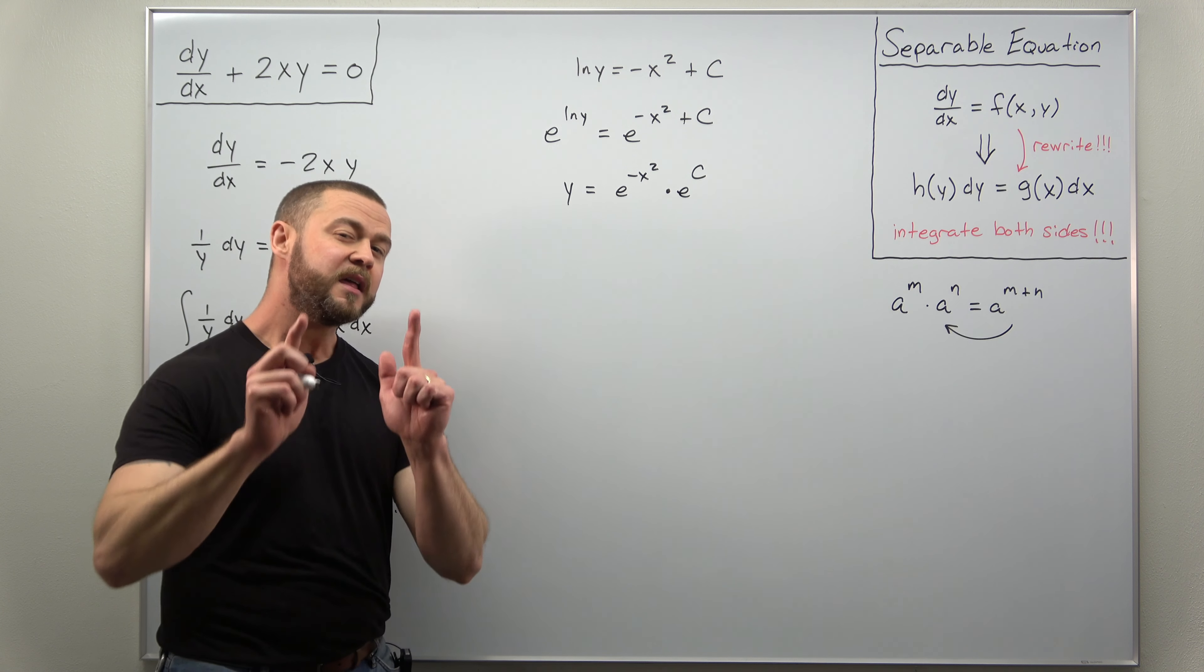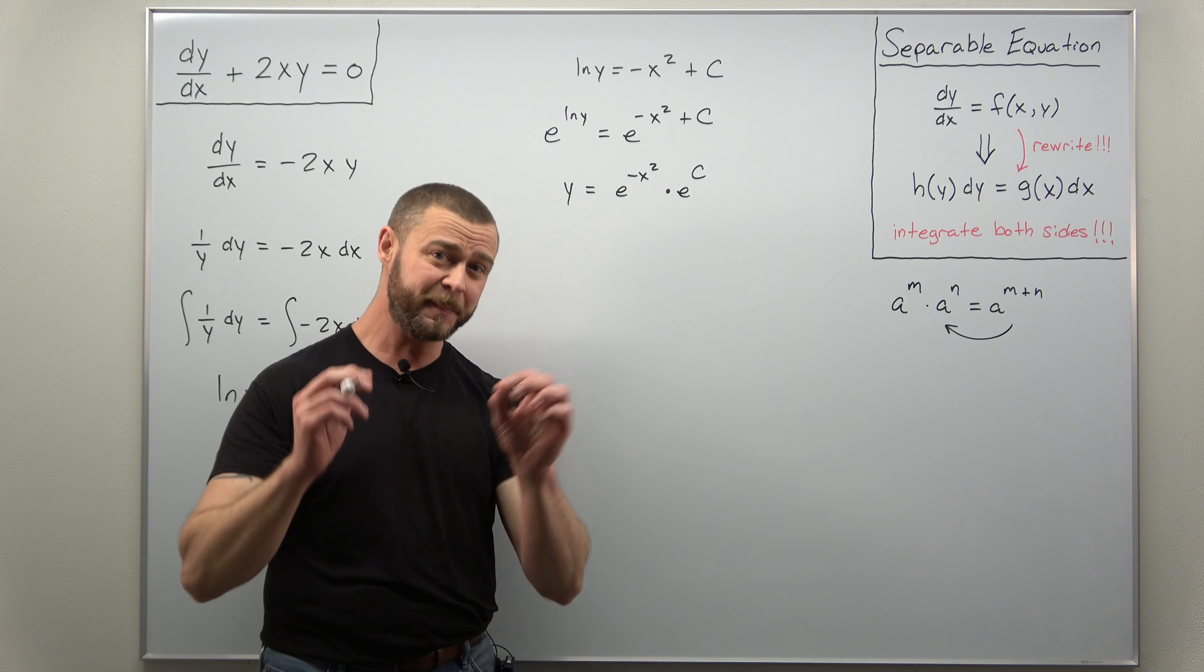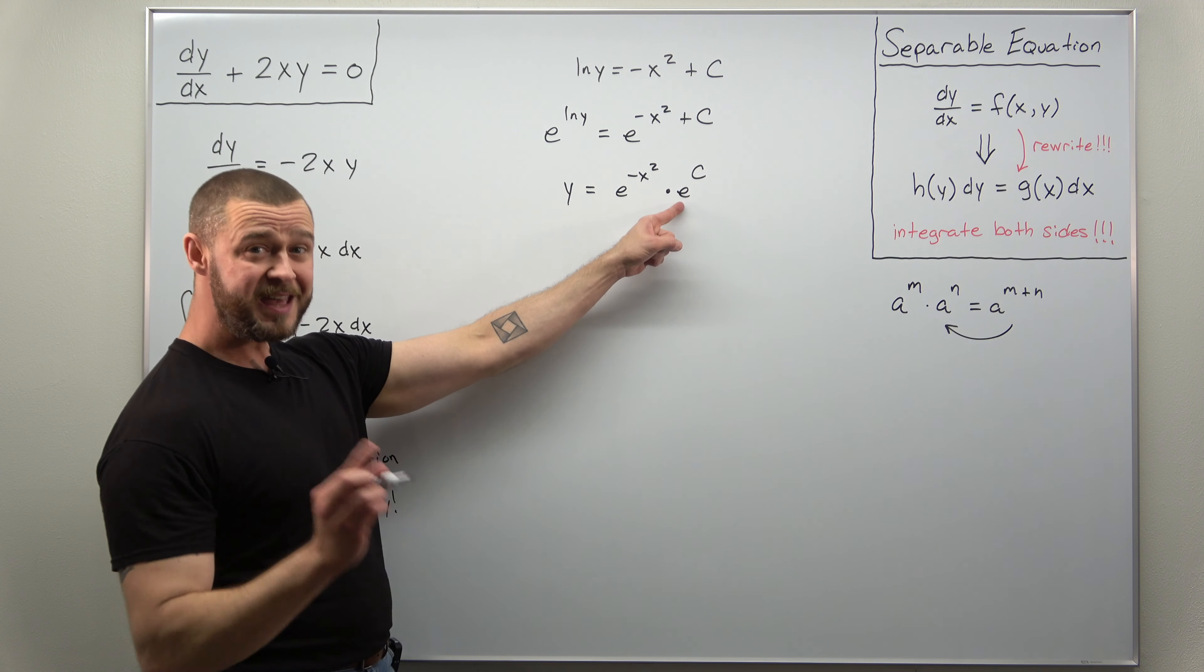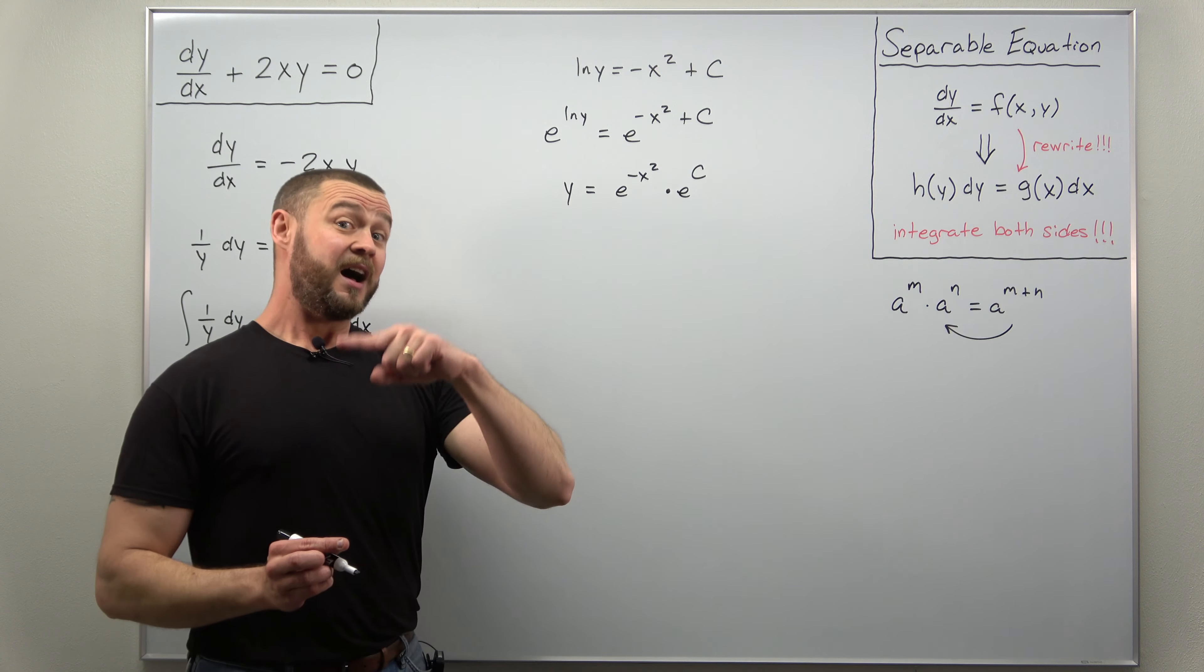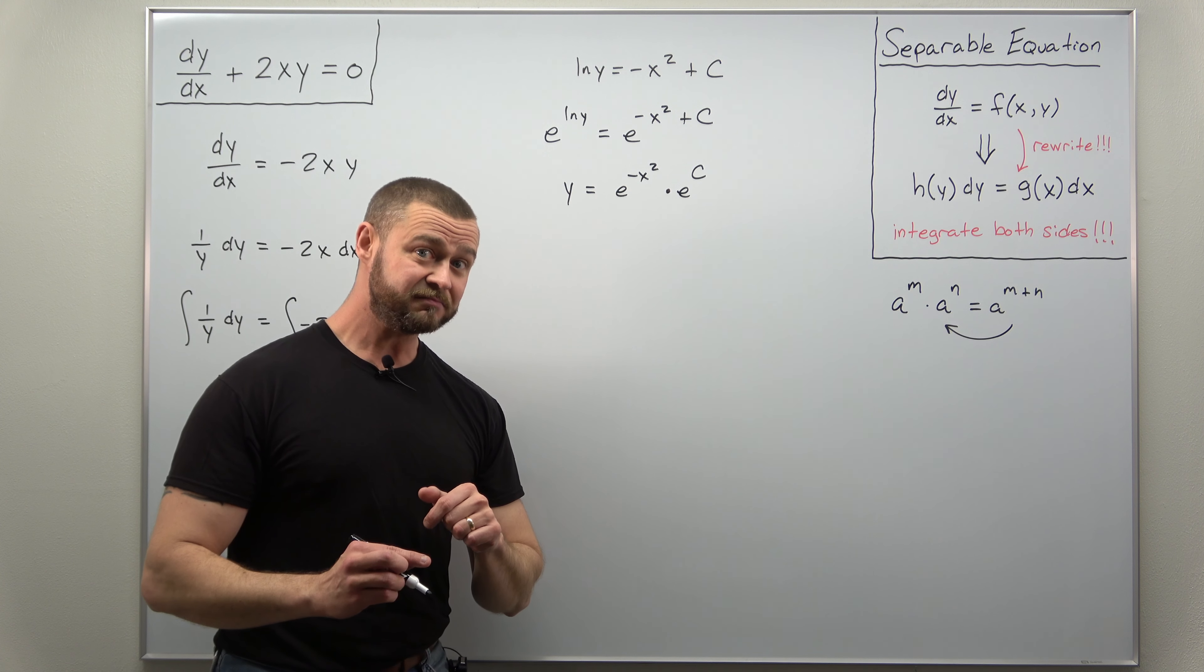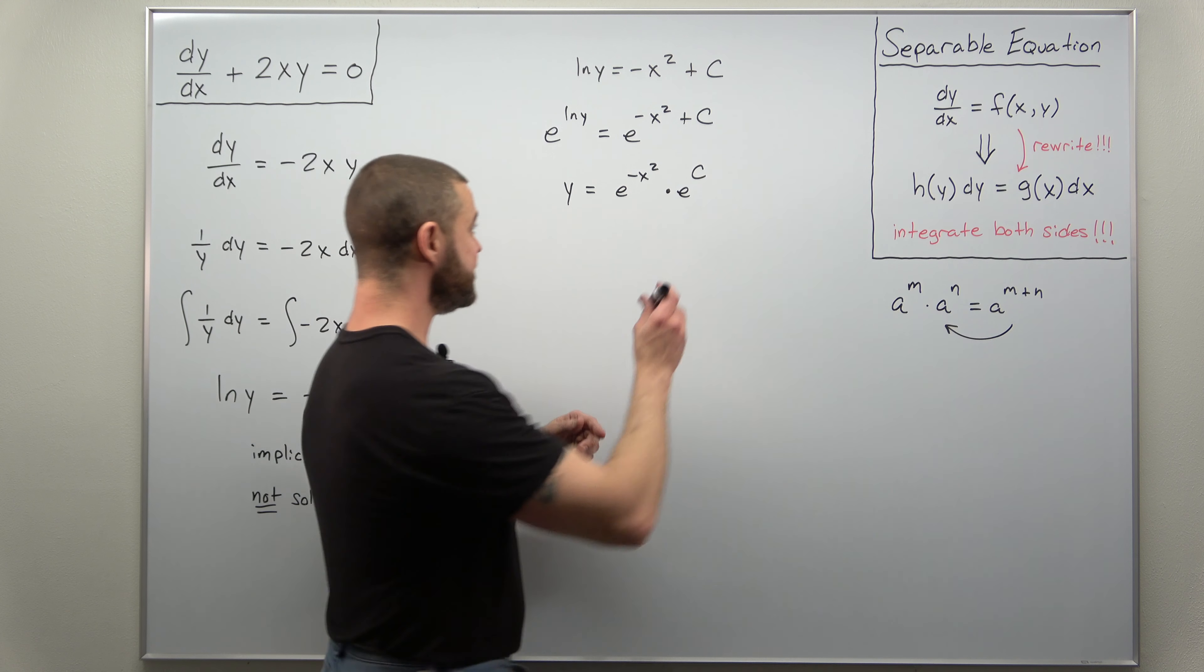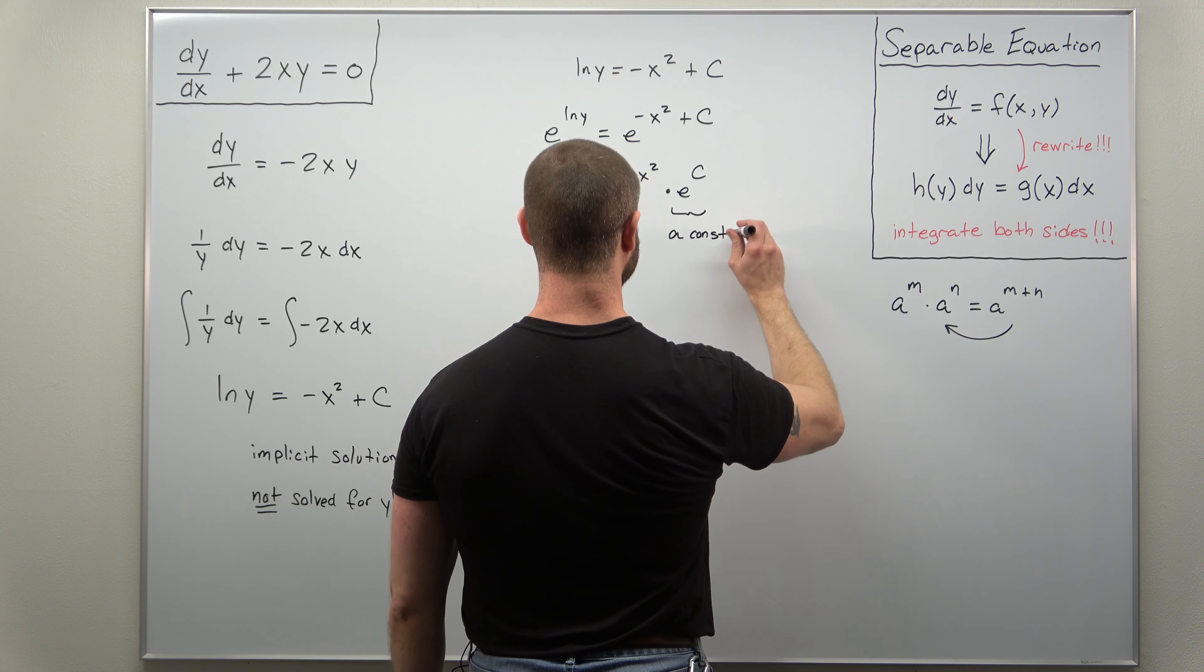And this is where in a differential equations course if your professor is going even a little bit too fast, it's going to look really confusing. E is a constant. C is a constant. A constant raised to a constant is another constant. So this e to the c is a constant.